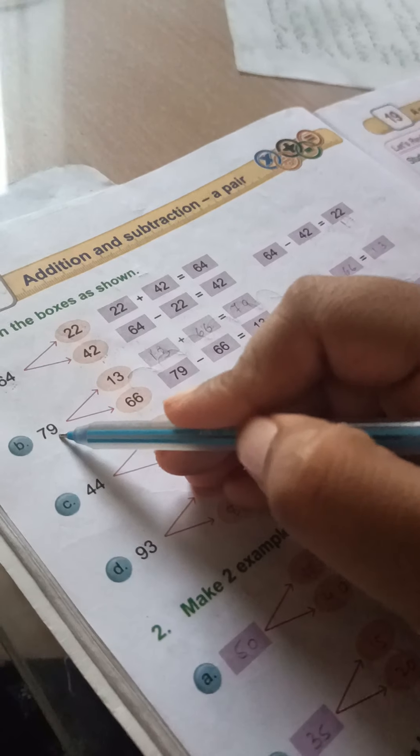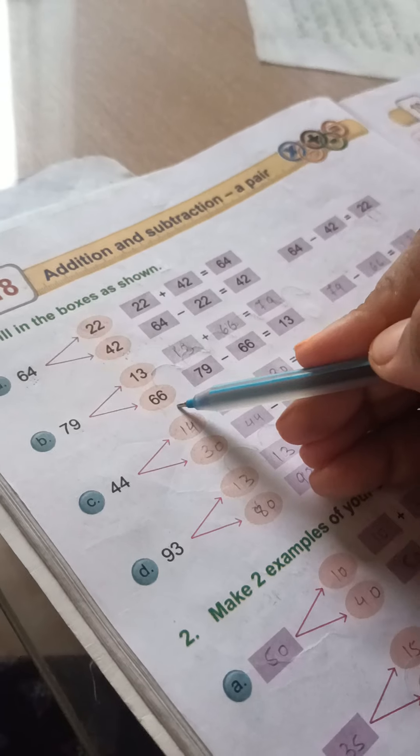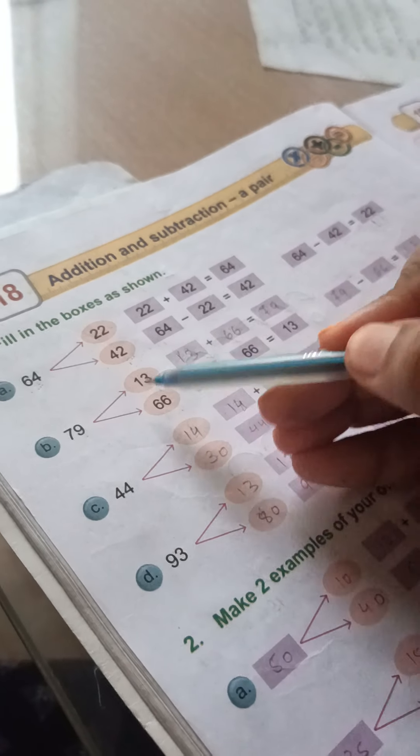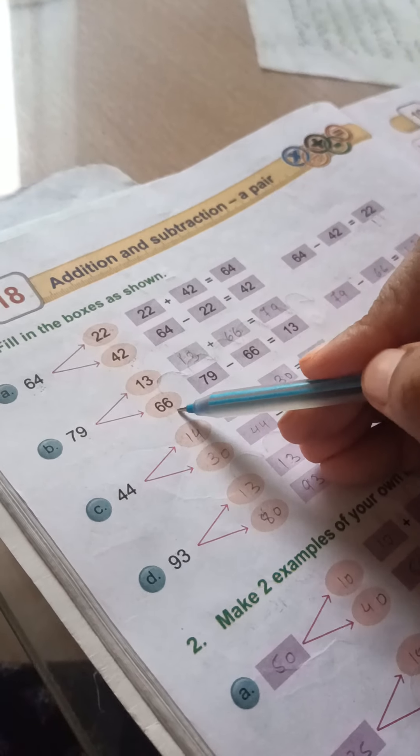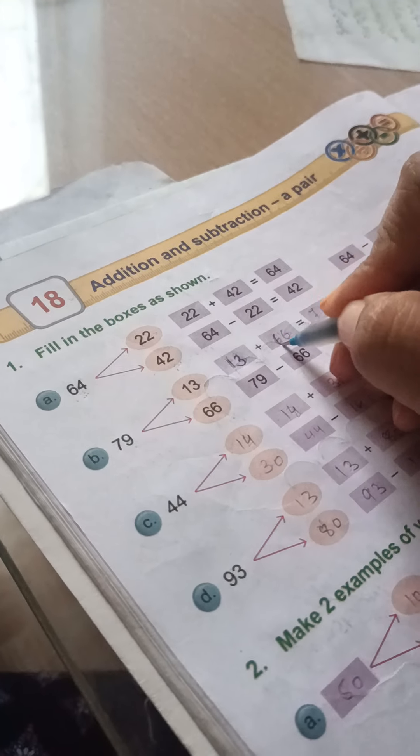So next is 79. One number is 13 and one number is 66. So this will be the same. That means, what happens? How will our answer come?